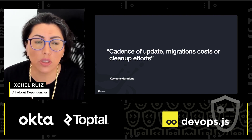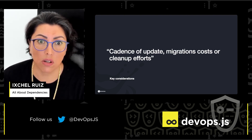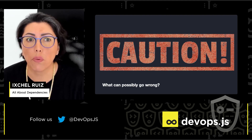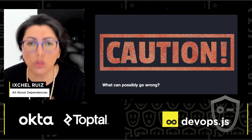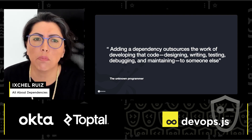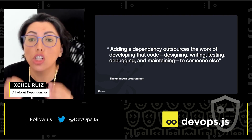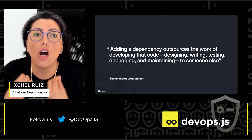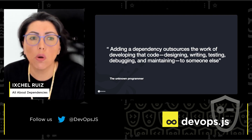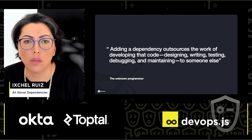These are really important during the development process and under normal circumstances when dependencies are okay. But things go wrong — and they usually go wrong. Adding a dependency outsources the work of developing that code: designing, writing, testing, debugging, and maintaining — to someone else, often an unknown programmer. And using that specific code exposes our programs to all the failures and flaws that exist in our dependency.